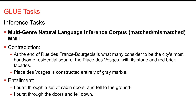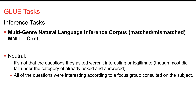'I burst through a set of cabin doors and fell to the ground' — 'I burst through the doors and fell down' — those entail each other. For neutral, we have two sentences that are just not about each other: 'it is not that the questions they asked weren't interesting or legitimate' versus 'all of the questions were interesting according to a focus group.' These sentences are similar in surface form but have no real connection.